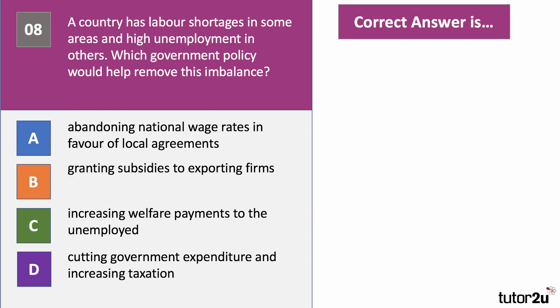Question eight: a country has labor shortages in some areas and high unemployment in others — which government policy might help remove this imbalance? The right answer is A. This is the argument for moving to more regional pay: pay might be lower in areas where there is a surplus of labor, and somewhat higher in areas where there is a shortage.